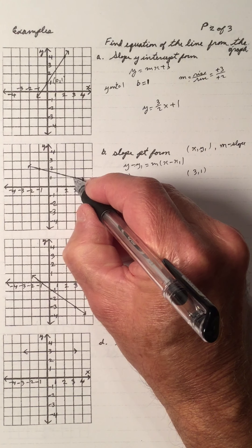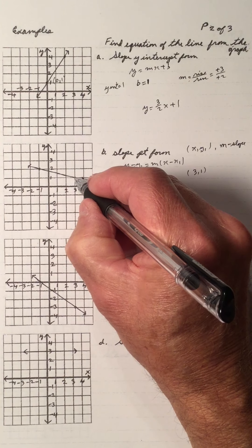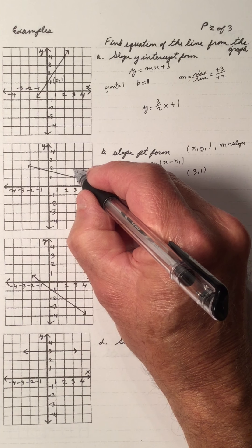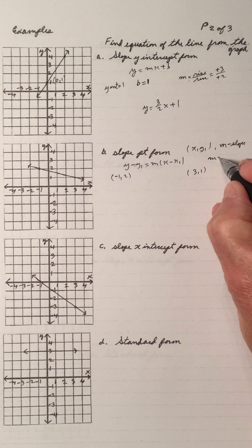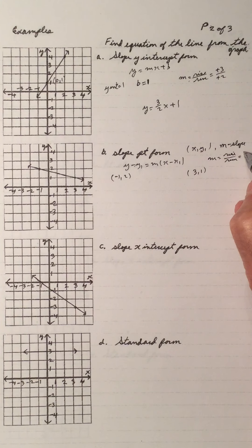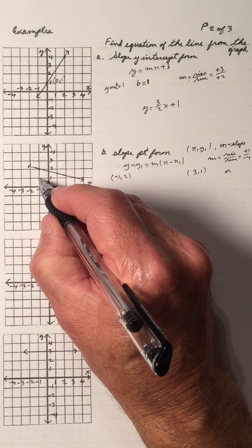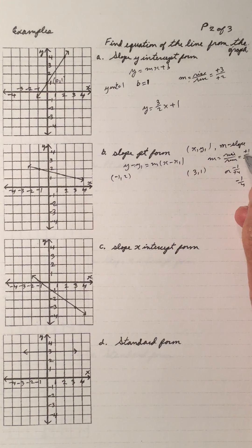I can go from this point to this one, always going up first — rise first. So from this point to this one, I rise plus 1 and run minus 4, because up is a plus and left is a minus. Or I could go from this point to this one: down minus 1 and right plus 4. Either way, the slope is going to be negative 1 over 4.